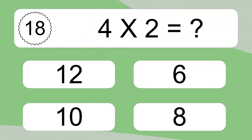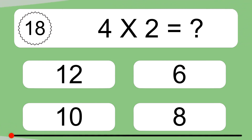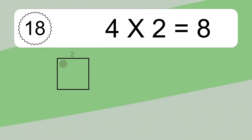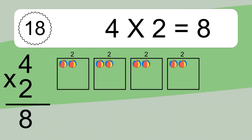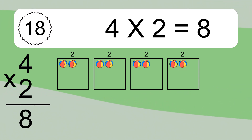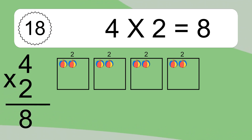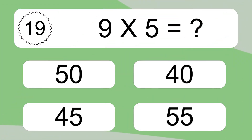Four times two equals what? Four times two equals eight. We have four boxes and each box has two colorful balls inside. If you count all the balls in all the boxes together, you will have four times two balls. This equals eight balls.